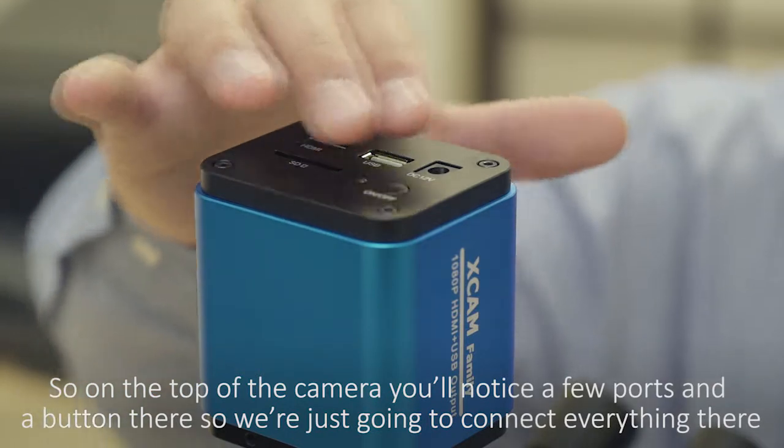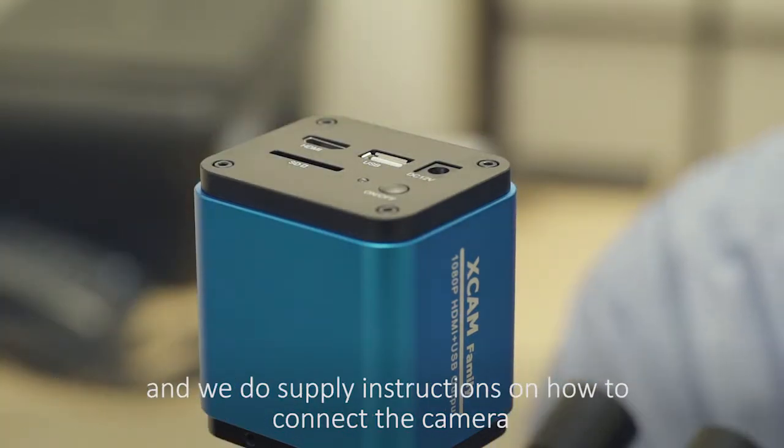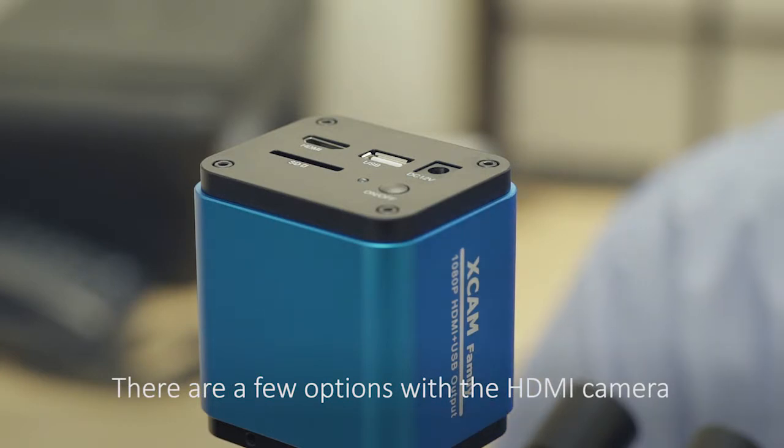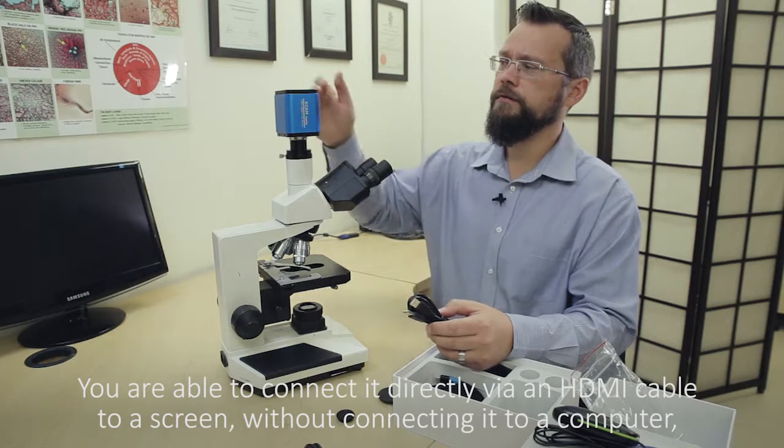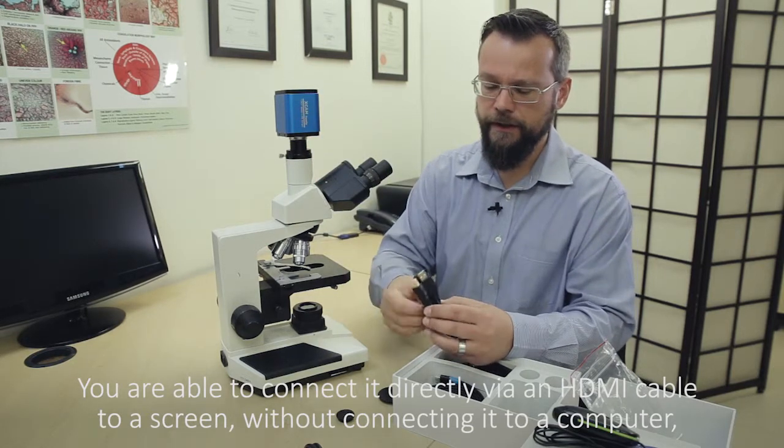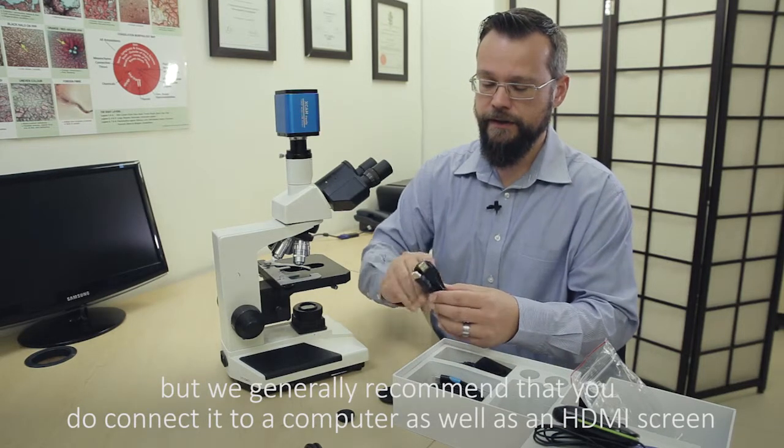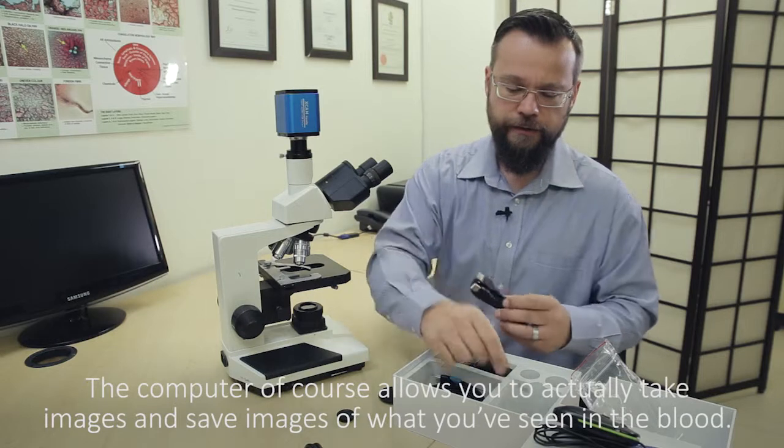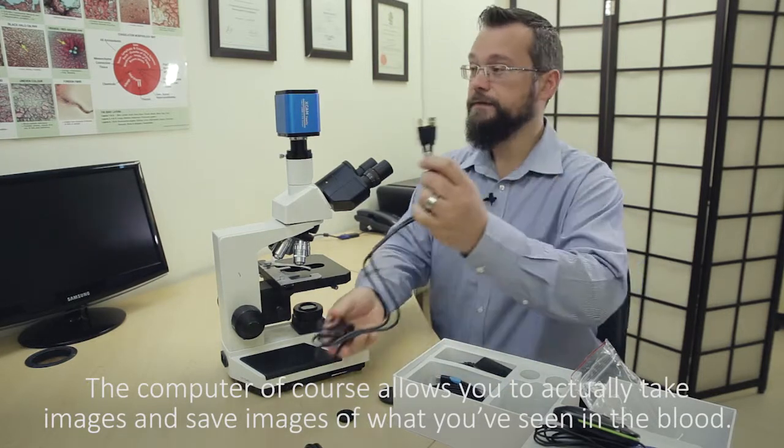So at the top of the camera you'll notice a few ports and a button there, so we're just going to connect everything there. We do supply instructions on how to connect the camera. There are a few options with the HDMI camera. You are able to connect it directly via HDMI cable to a screen without connecting it to a computer, but we generally recommend that you do connect it to a computer as well as an HDMI screen. The computer of course allows you to actually take images and save images of what you've seen in the blood.